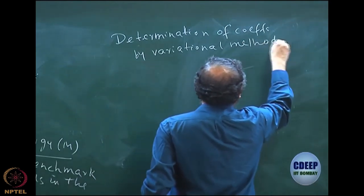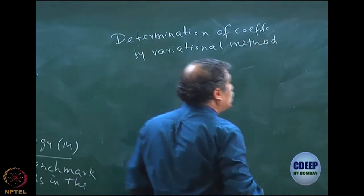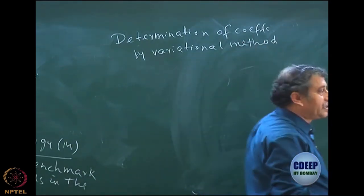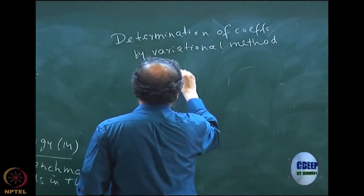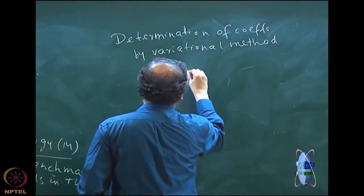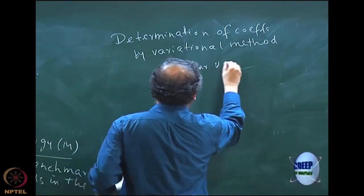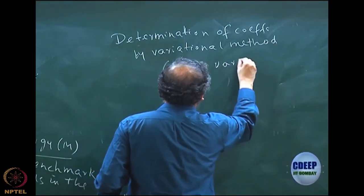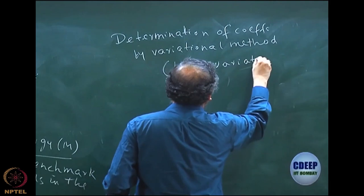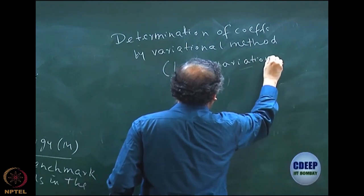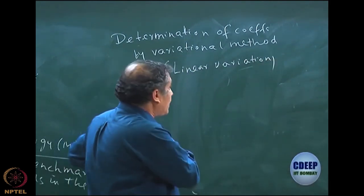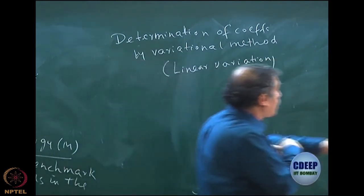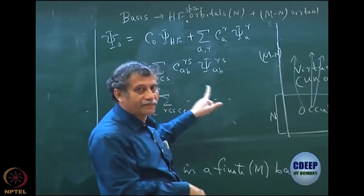If you look at the nature of the variation, this is basically nothing but linear variation, because I am only getting linear coefficients — the coefficients are only linear in nature. So this is called linear variation because these coefficients are only linear.